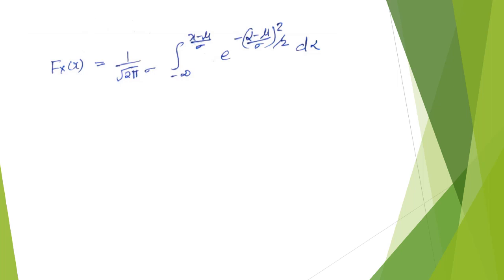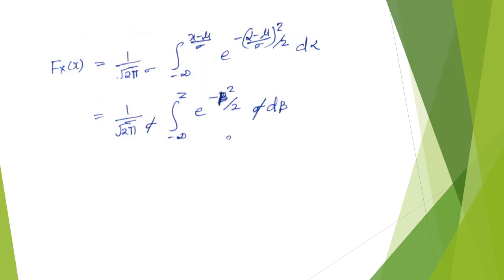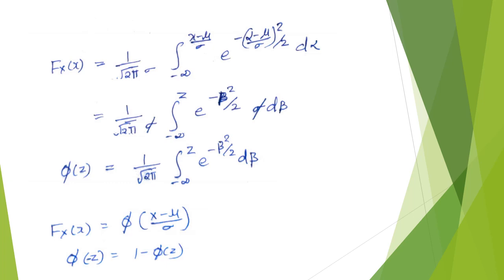Substituting into the CDF: F_X(x) = (1 / sqrt(2π) * sigma) * integral from minus infinity to (x - mu)/sigma of exp(-beta²/2) * sigma d(beta). The sigma terms cancel, giving F_X(x) = phi(z), where phi(z) = (1/sqrt(2π)) * integral from minus infinity to z of exp(-beta²/2) d(beta), and z = (x - mu) / sigma.